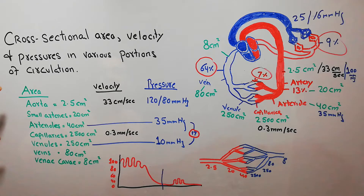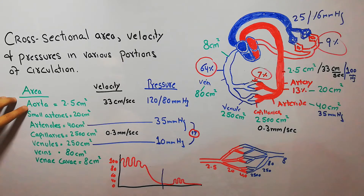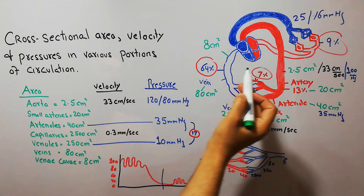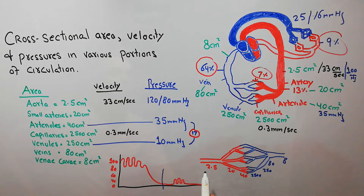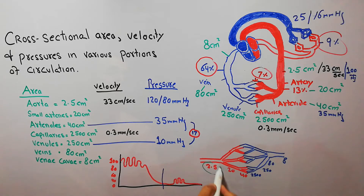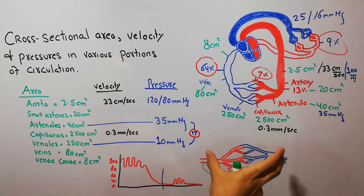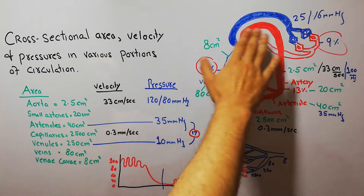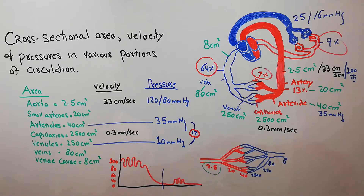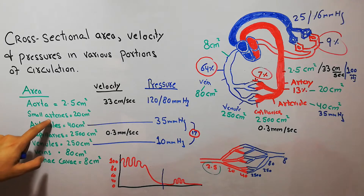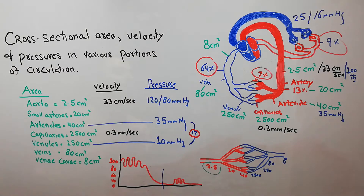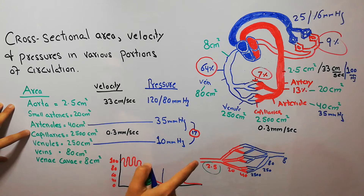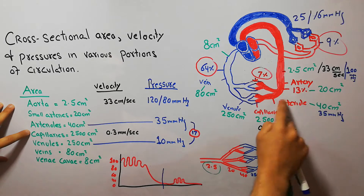Looking at cross-sectional areas in different parts of the circulatory system: the aorta, the largest artery in the human body, has a cross-sectional area of around 2.5 centimeters squared. If we combine all the small arteries together, their total cross-sectional area is around 20 centimeters squared. The arterioles combined make around 40 centimeters squared.